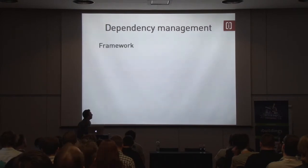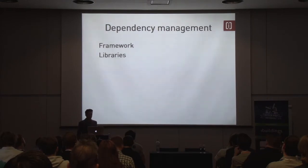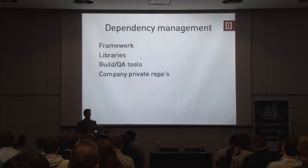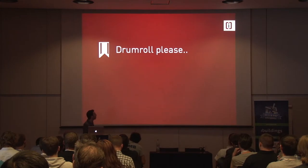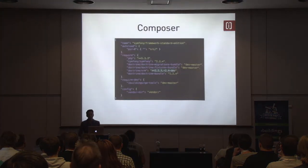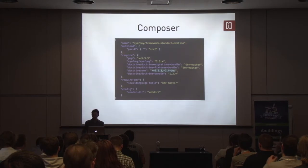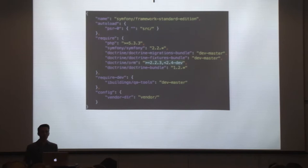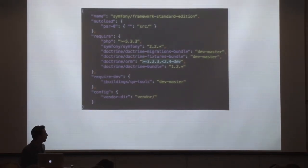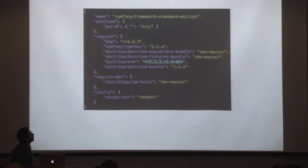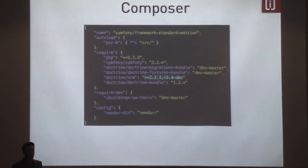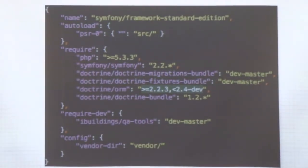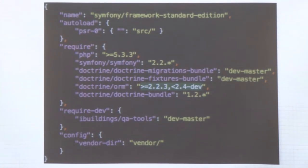What if you have a framework, libraries, QA tools, or private repositories? You want them all combined in your project. Composer — I think it's awesome. It's super easy to set up and integrate in your deployment script. This is actually a working config file: you just manage some tools you want to use in your project, and if you do a composer install inside your deployment script, you can easily integrate it. It works great.